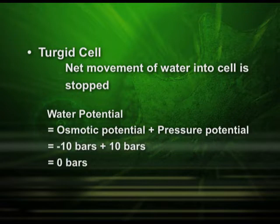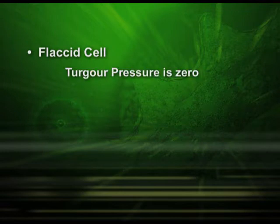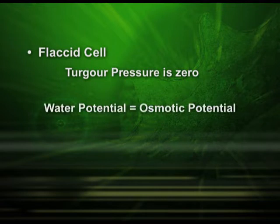But in the case of a flaccid cell, turgor pressure is 0. Let us see this with the help of the equation: water potential is equal to osmotic potential, so the net pressure is 10 bars.